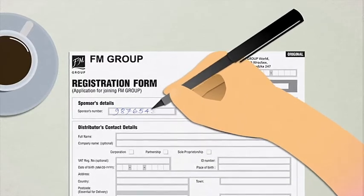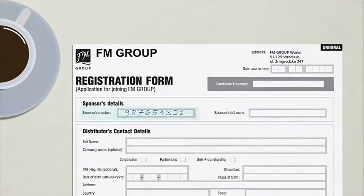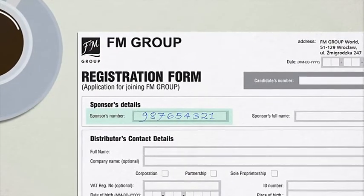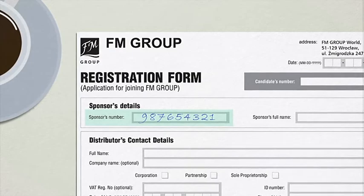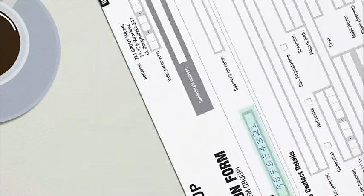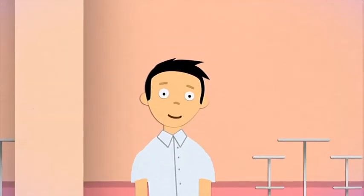The only difference is that now you should fill your distributor's number in the upper left field, which reads sponsor's number, while the candidate should fill in his or her personal data in the same fashion you had before. For more information, visit www.fmworld.com.